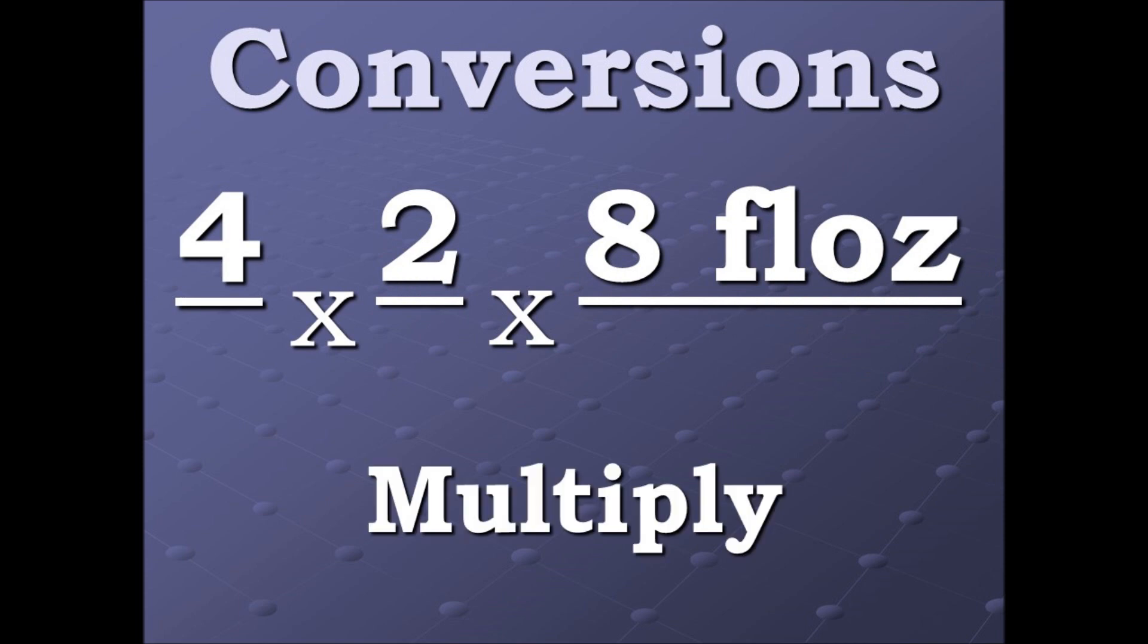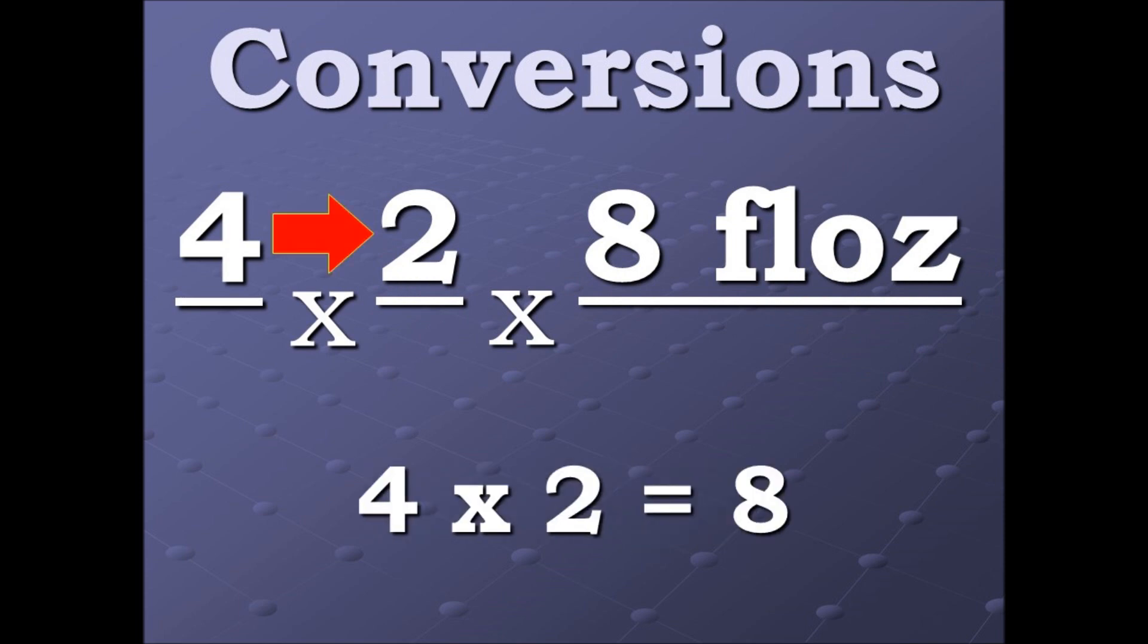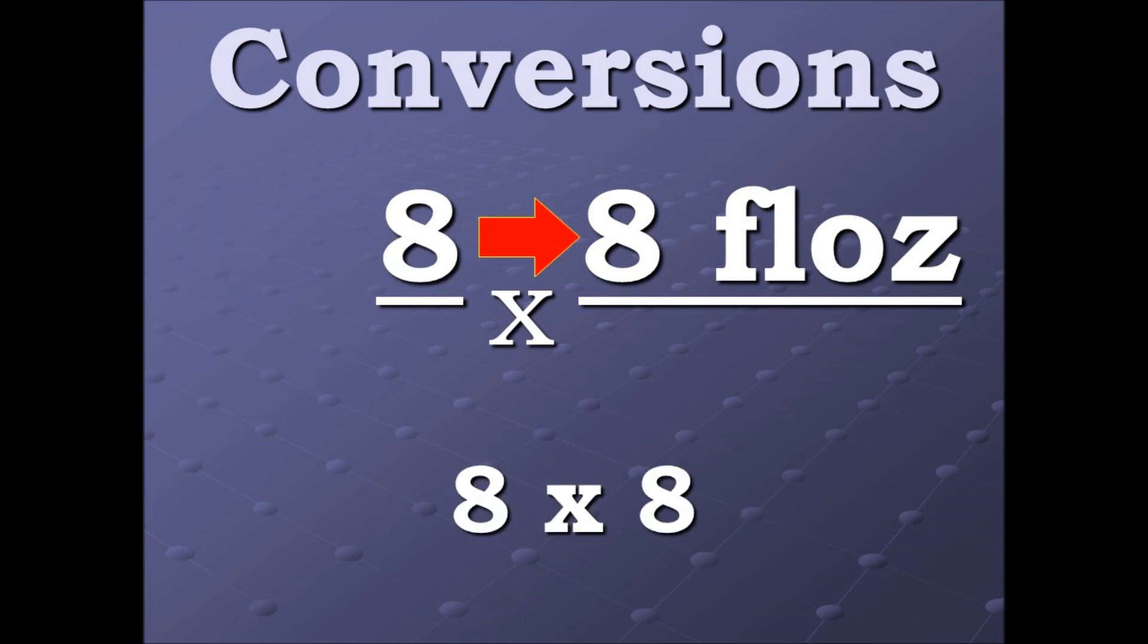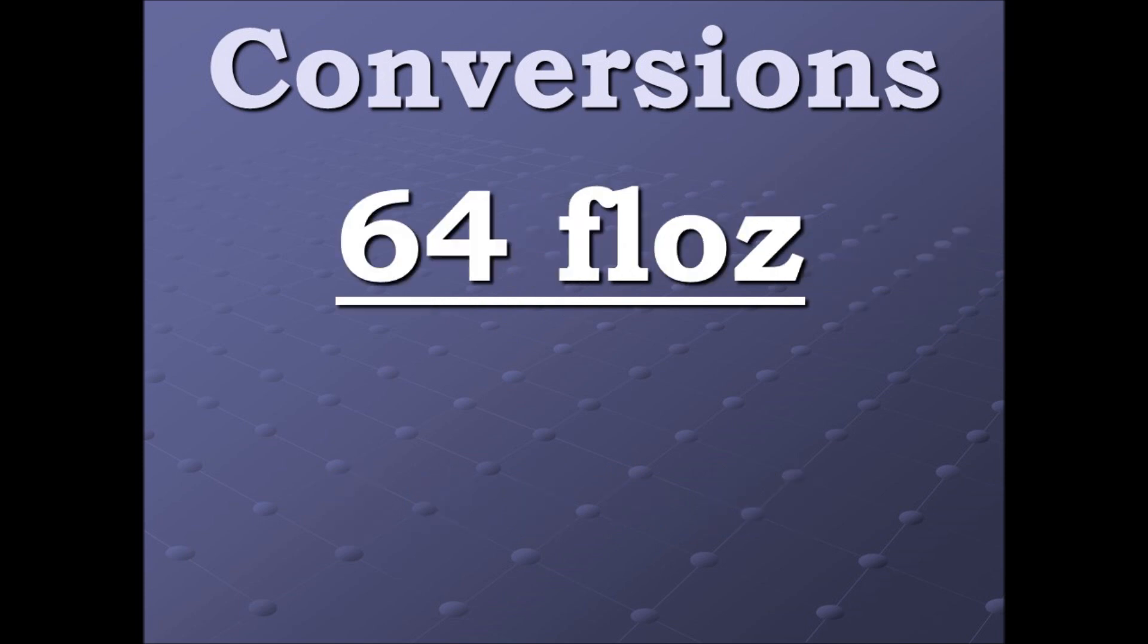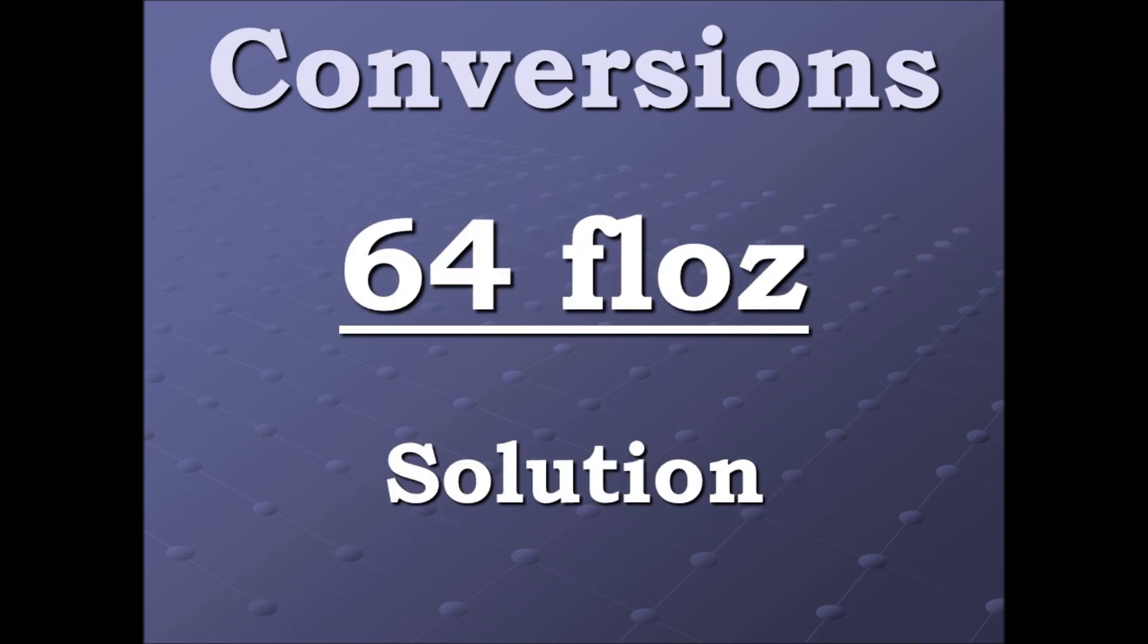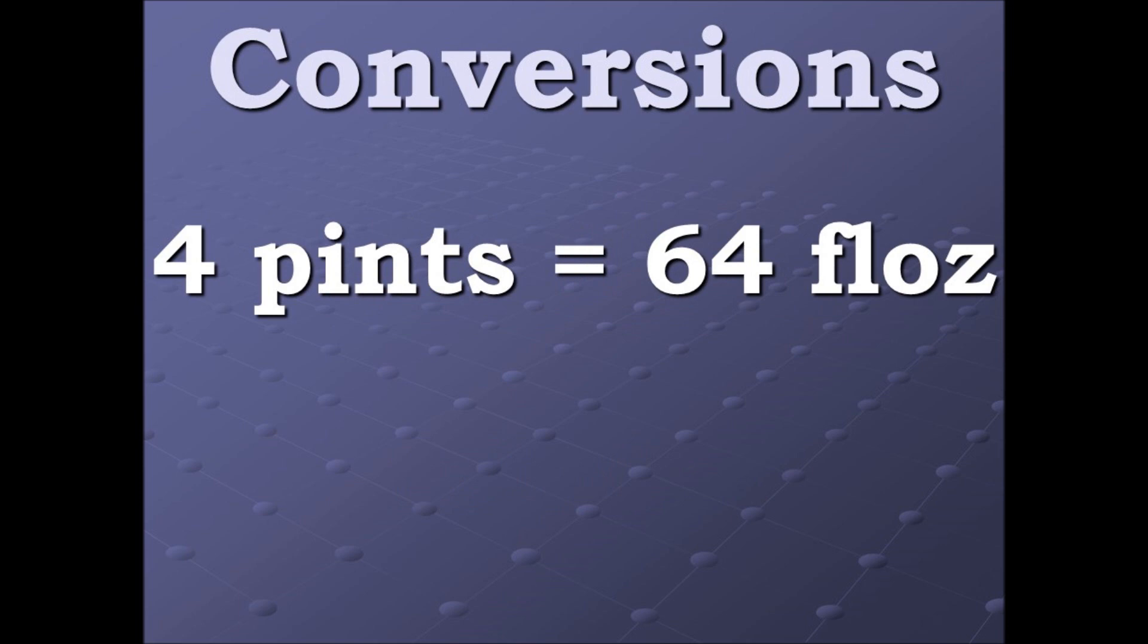Now we multiply. Four times two equals eight. Eight times eight equals 64. And that's our solution. So four pints equals 64 fluid ounces.